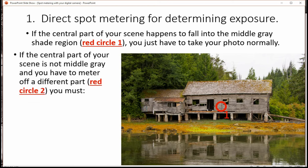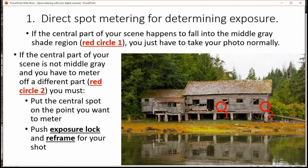If the central part of your scene is not middle gray, then you have to meter off a different part. So let's say for example that number one didn't work there but number two is a perfect gray spot. Then what you would do is put your central spot on that point and then push exposure lock and reframe for your picture. You could also change it to manual and set the shutter speed at the point that was noticed.